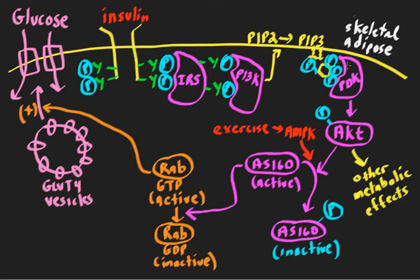Those are called pleckstrin homology domains, or PH domains. This important kinase here, called PDK, or phosphoinositide-dependent kinase, it makes sense why it's called that, because it depends on this PIP3. When this PDK gets attracted to this PIP3 via its PH domain, it gets activated.